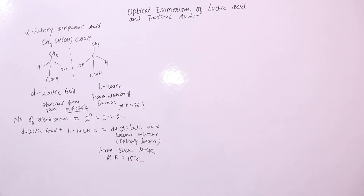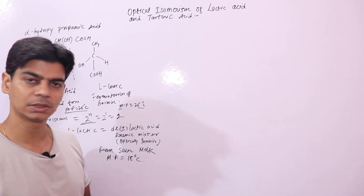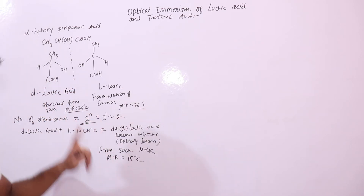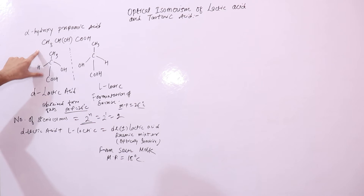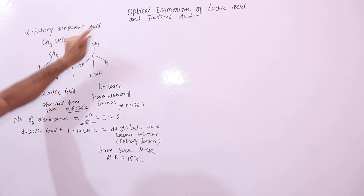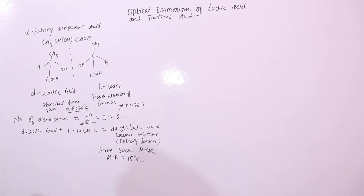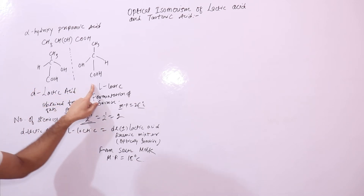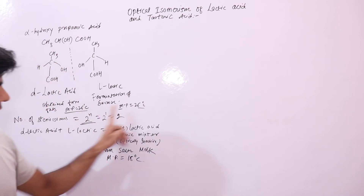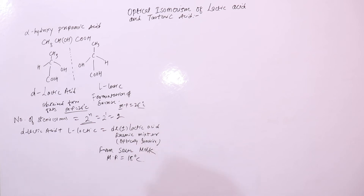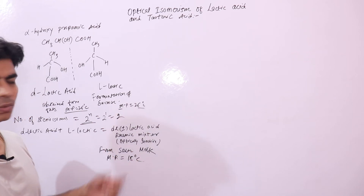To summarize: there is a formula to find the number of stereoisomers — 2 to the power of N, where N is the number of chiral carbons. Lactic acid is alpha hydroxypropanoic acid. D-lactic acid is obtained from fats, L-lactic acid is obtained from sucrose, and the melting point of both is 26 degrees Celsius. When you mix both, you get a racemic mixture whose melting point is 18 degrees Celsius and which is found in sour milk.